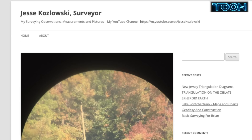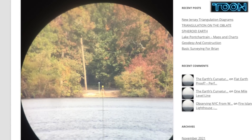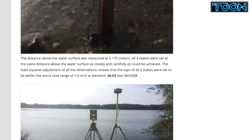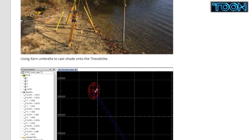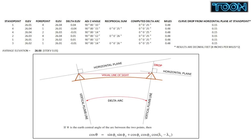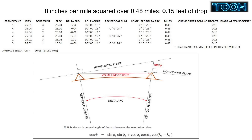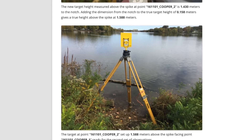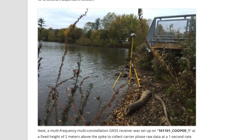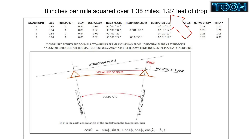I will cite some measurements. Jesse Kozlowski, a licensed surveyor, measured across a lake — a lake being what flat earthers claim is flat. It's level, and level is a curve. He measured over 0.48 miles: using eight inches per mile squared, it predicts 0.15 feet of drop, and he measured 0.15 feet of drop. Then he did it again over 1.38 miles — the prediction is 1.27 feet of drop, and he measured 1.28 feet of drop.